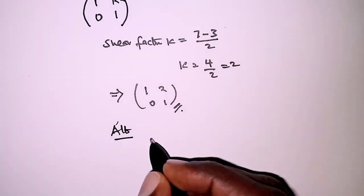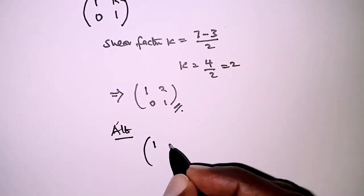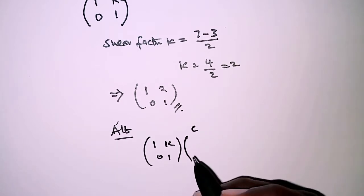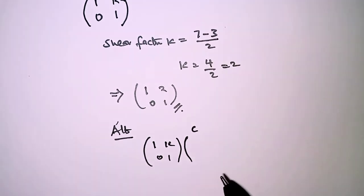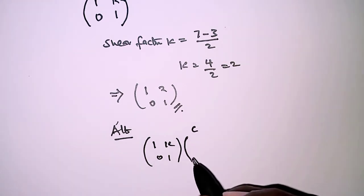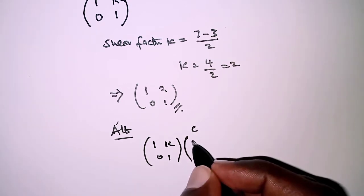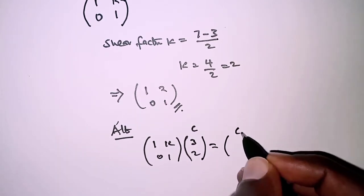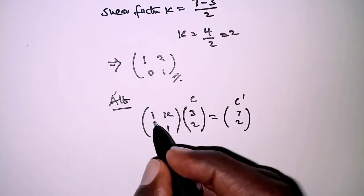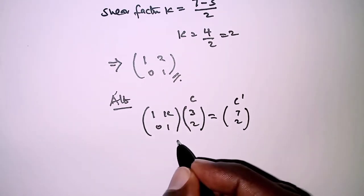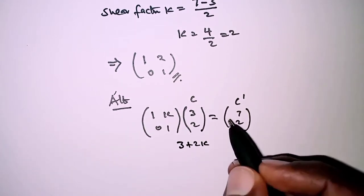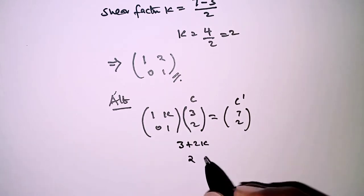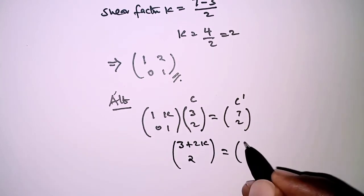Alternatively, we can have the shear matrix [1, 0; k, 1] pre-multiplying the object points. Using point C with coordinates (3, 2), when multiplied this gives C'(7, 2). Multiplying out we get 3 plus 2k in the upper part, and 0 times 3 plus 1 times 2 equals 2 in the lower part. This should be equivalent to the right-hand side (7, 2).